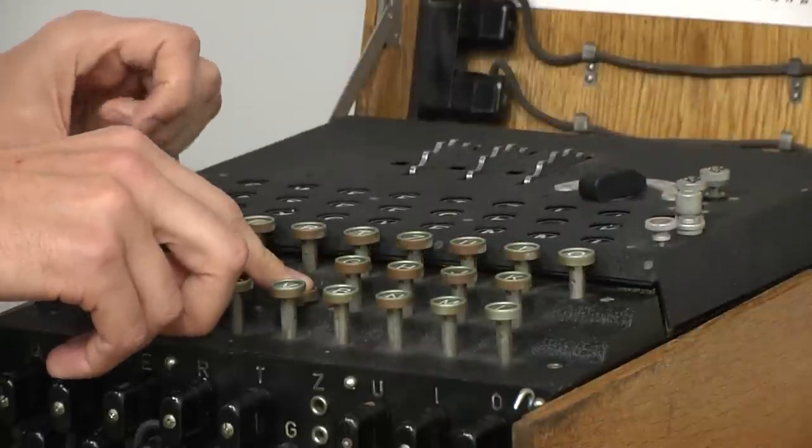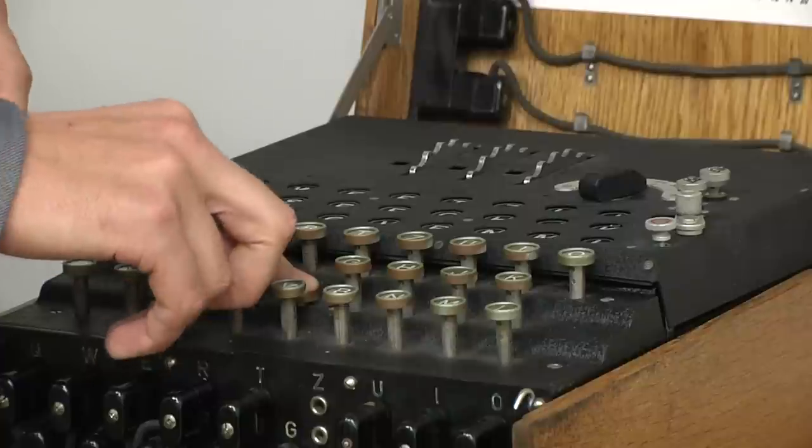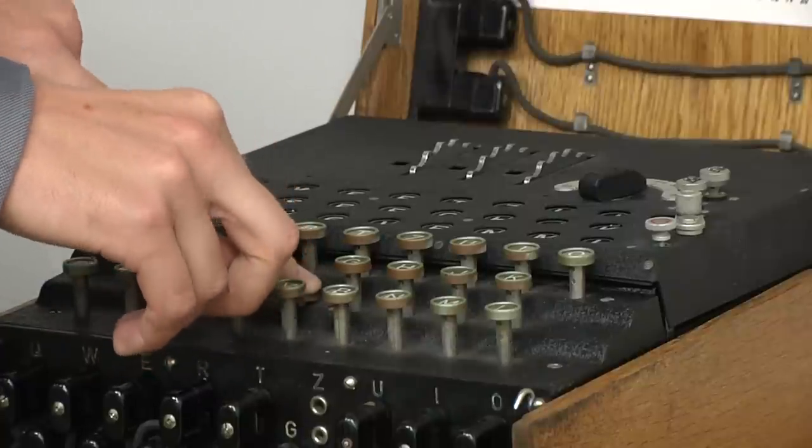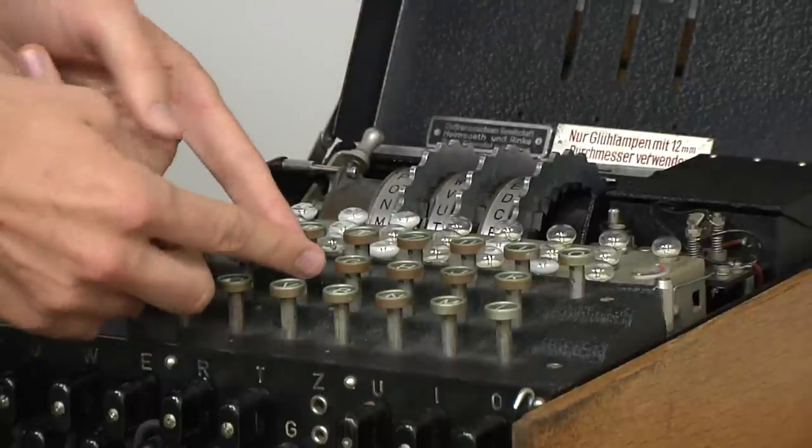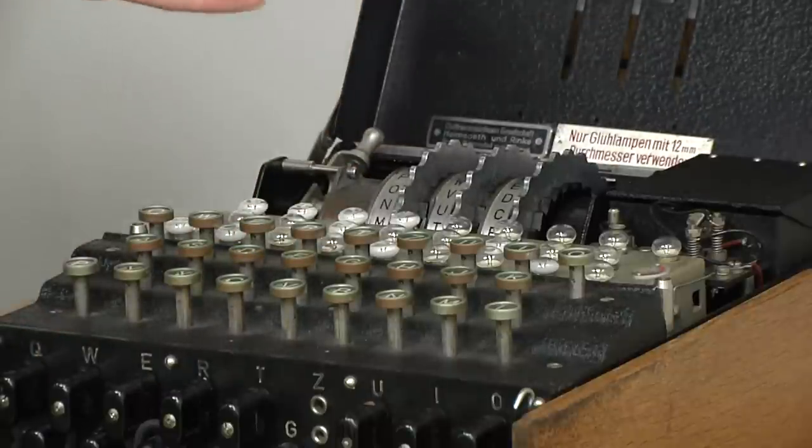If I were here encrypting F, it would go to G. The next time I do it, I've got a dirty contact there, so it didn't light up. F is going to Y. The process for encrypting, you push the key of the message you want to send, and look at which light lights up to get your ciphertext.